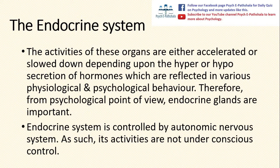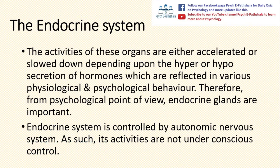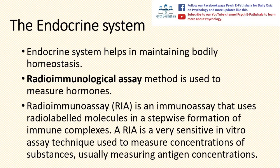Therefore, from a psychological point of view, the endocrine system and endocrine glands are very important. The endocrine system is controlled by the autonomic nervous system, and as such, its activities are not under conscious control. The endocrine system helps in maintaining bodily homeostasis.